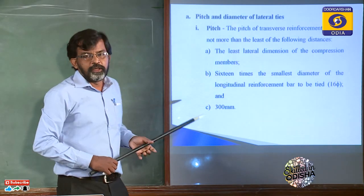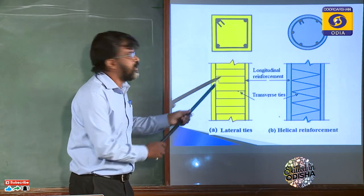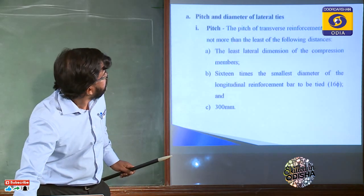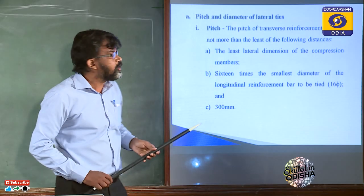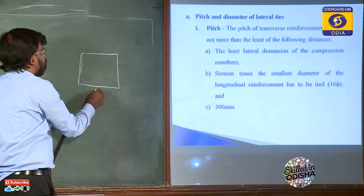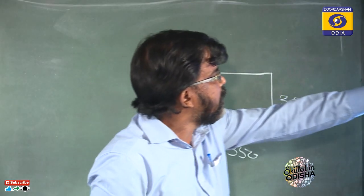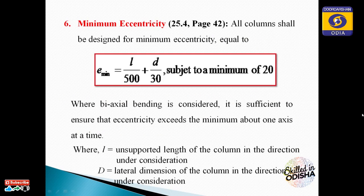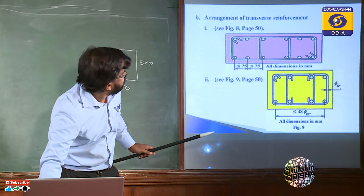The pitch — which is the distance between two transverse reinforcements — has a codal provision and restriction. First, the pitch shall not exceed the least lateral dimension of the compression member. For example, if a column is 350mm by 300mm, the pitch cannot be more than 300mm — the smaller dimension.